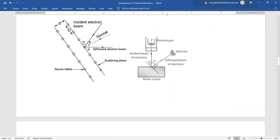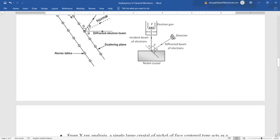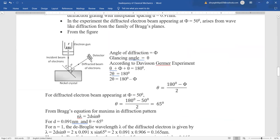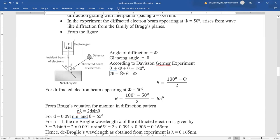Let us find the wavelength. Have a look at the diagram. The incident beam, the diffracted beam, and the angle between them is phi, with angle theta on both sides. The angle of diffraction phi and glancing angle theta give us: theta plus phi plus theta equals 180 degrees, so 2 theta plus phi equals 180, thus theta equals (180 minus phi) divided by 2. For diffracted electron beam at phi equals 50 degrees, we get theta equals 65 degrees.